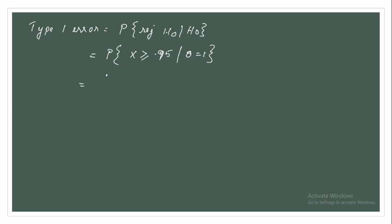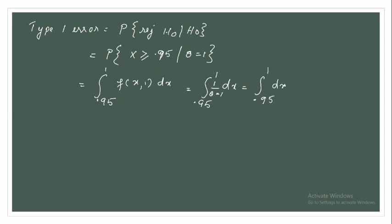This equals the integral from 0.95 to 1 of f(x, 1) dx, which is the integral from 0.95 to 1 of dx — because θ = 1, so 1/θ = 1. Evaluating this gives x from 0.95 to 1, which equals 0.05. So the Type 1 error is 0.05.